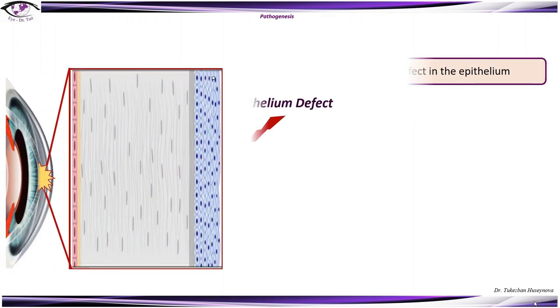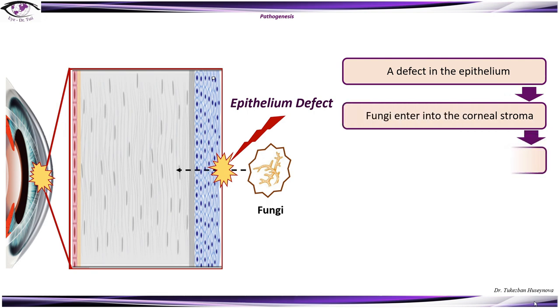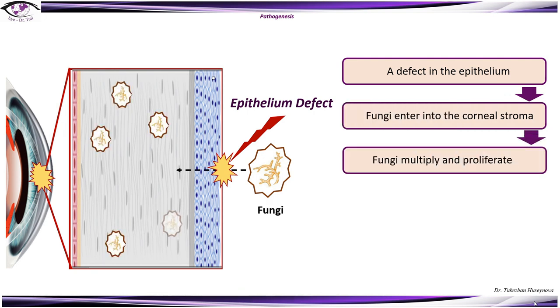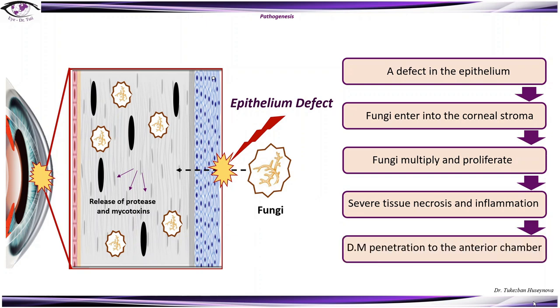Pathogenesis: Fungi enter the corneal stroma through a defect in the epithelial barrier. Once in the stroma, fungal pathogens multiply and proliferate via production of several proteases and mycotoxins, resulting in severe tissue necrosis. Through an intact Descemet's membrane, the organism can penetrate into the anterior chamber. Filamentous fungi may also extend into the sclera, which is associated with poor outcomes.